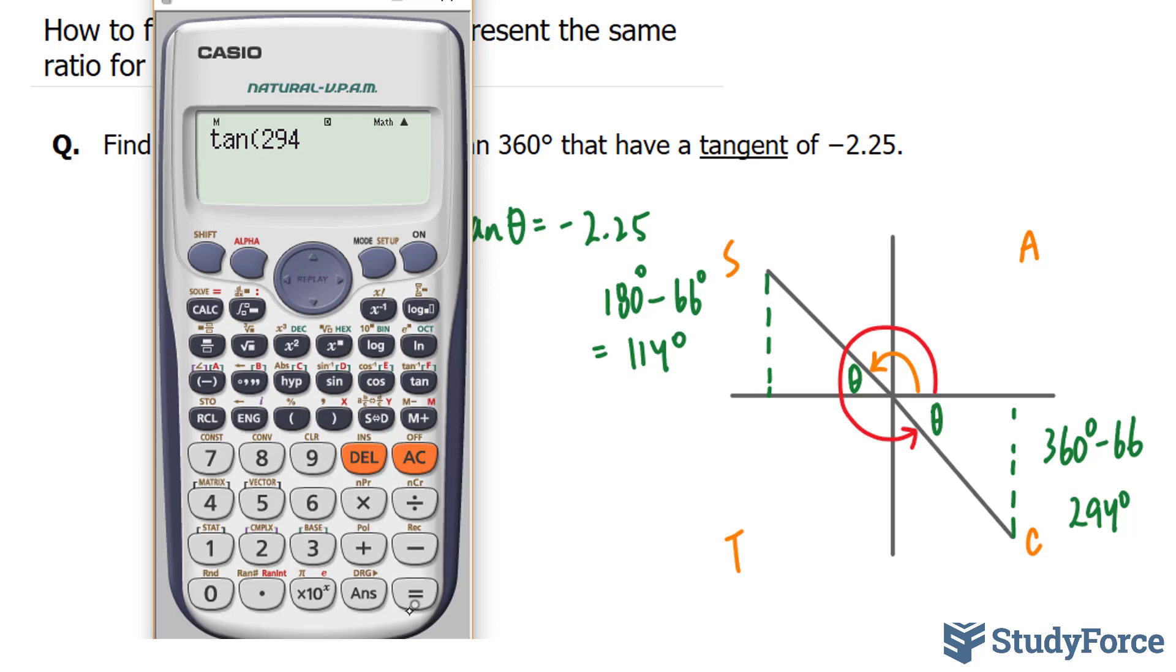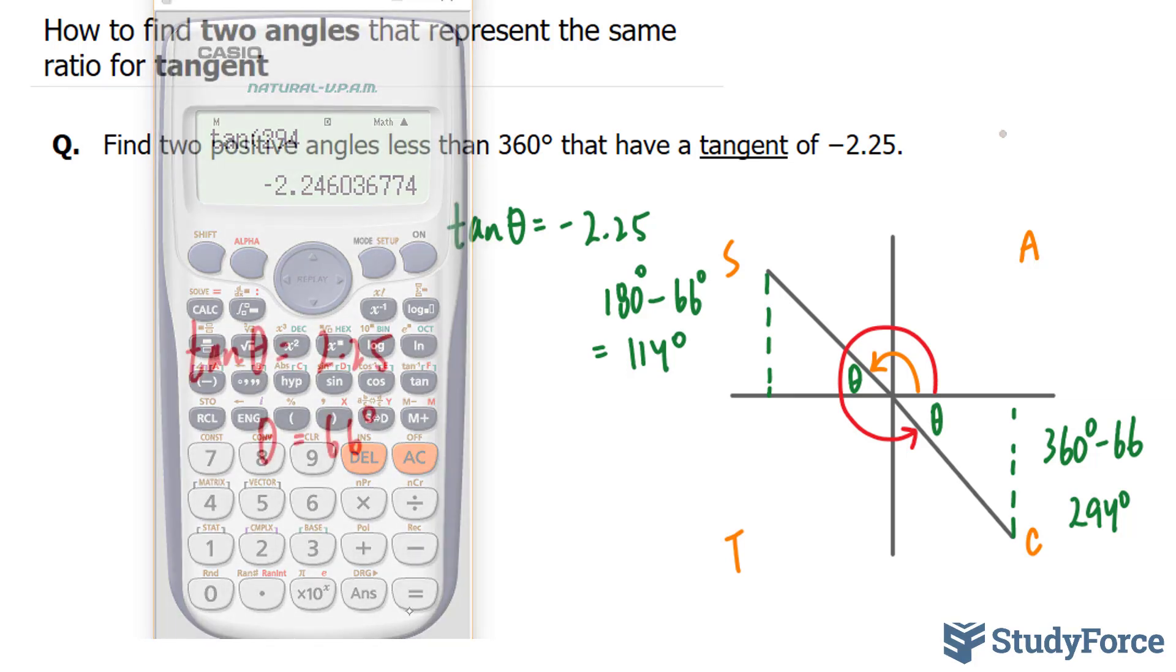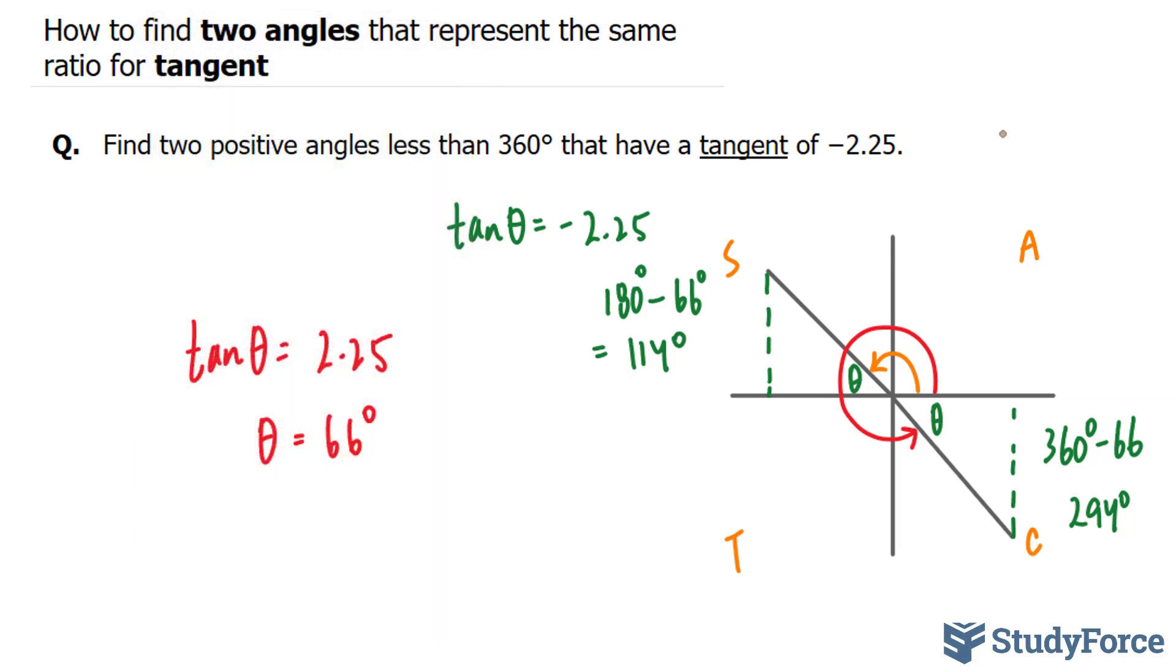And 294 gives us the exact same output. And there you have it. That is how to find two angles that represent the same ratio for tangent.